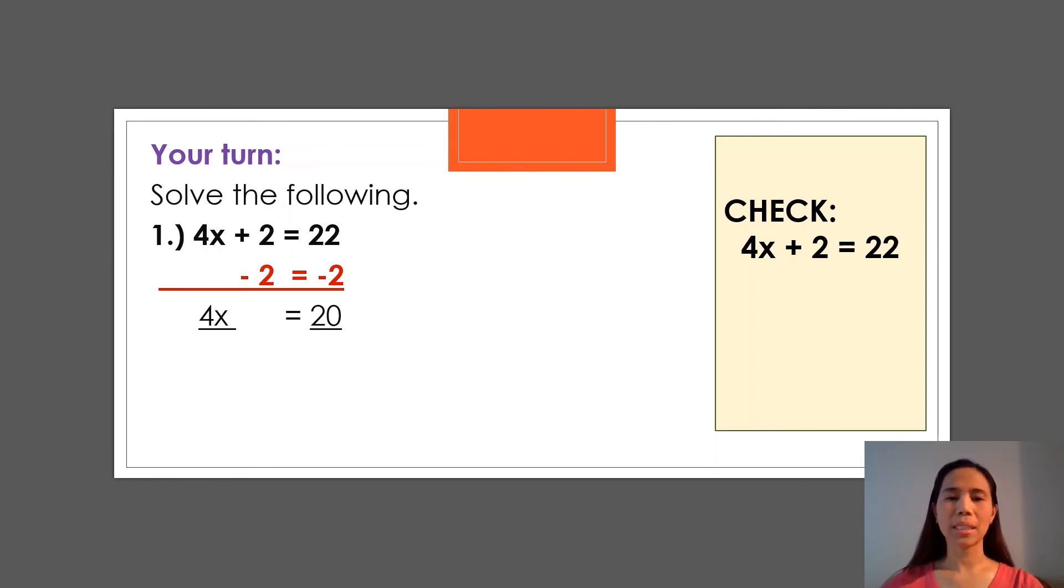So since this is multiplication, the opposite is division. So we divide both sides by 4. So if we divide both sides by 4, this is 4 ÷ 4 = 1 or just x. And then 20 ÷ 4 = 5. So x now equals to 5.